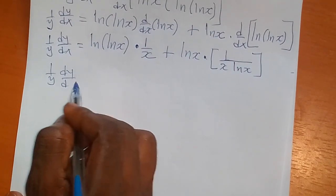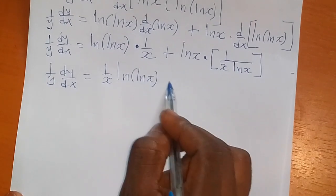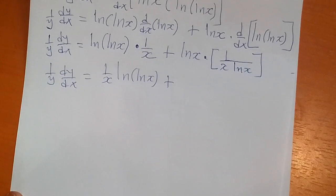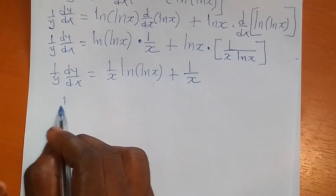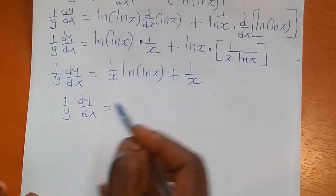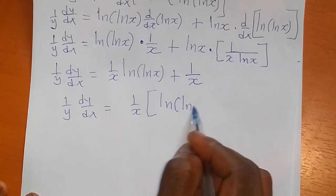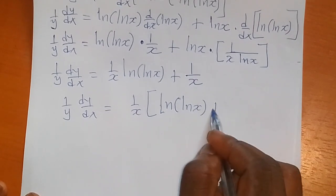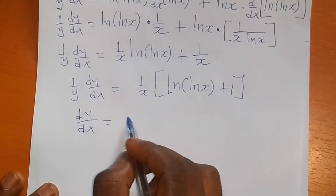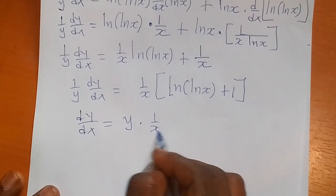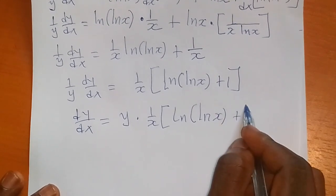Factoring out 1/x: (1/y)·(dy/dx) = (1/x)·[ln(ln x) + 1]. Then doing cross multiplication: dy/dx = y · (1/x)·[ln(ln x) + 1].